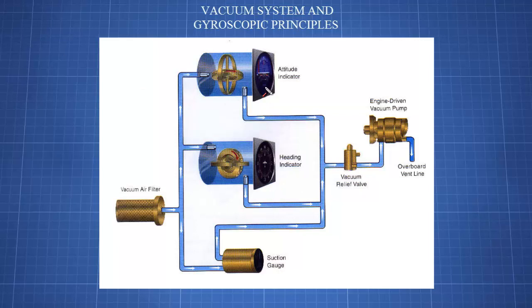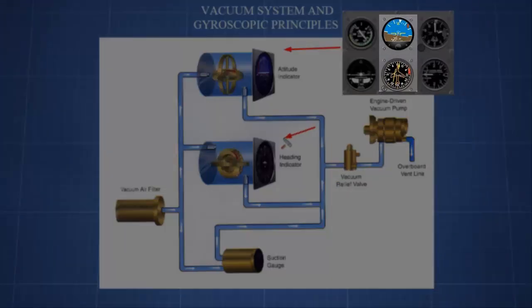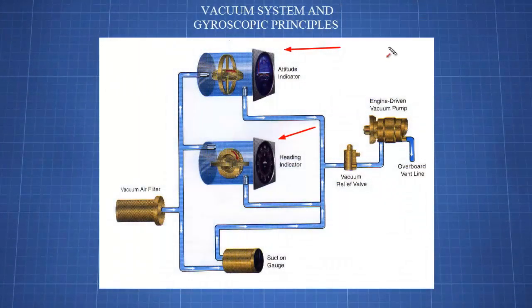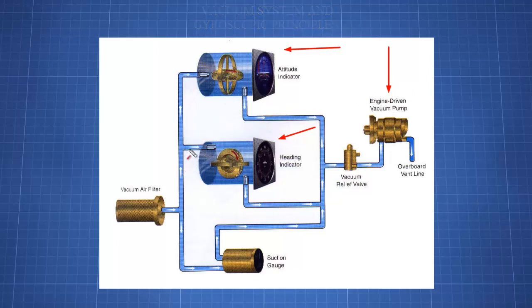You'll see here on our screen we have a simplified diagram of your typical vacuum system that you're going to find in a light GA aircraft. Our two main instruments that we're concerned about that are going to be running off the vacuum system are the attitude indicator and the heading indicator, and it is driven by the engine driven vacuum pump.